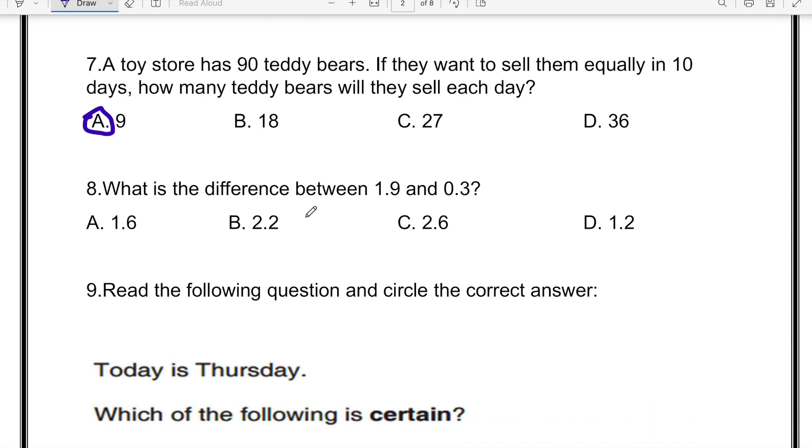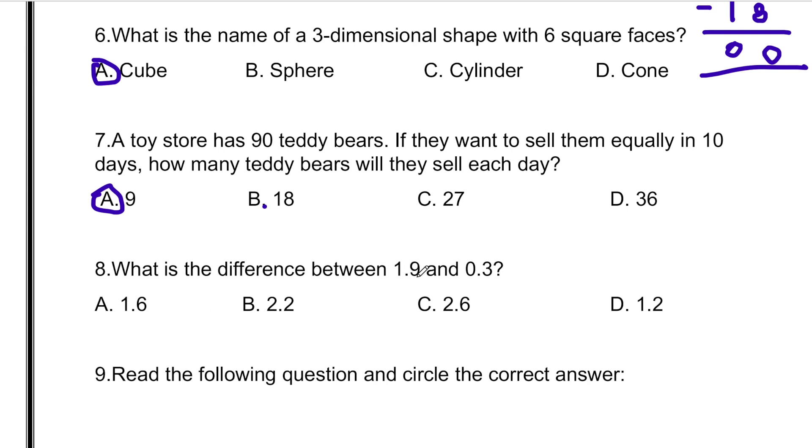What is the difference between 1.9 and 0.3? First of all, the meaning of difference is subtracting. So if we minus 0.3 from 1.9, then the answer will be 1.6. So the answer is 1.6.